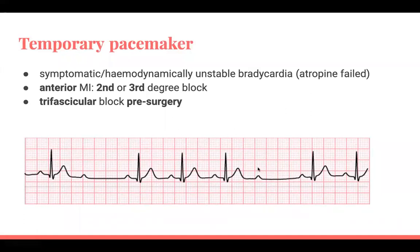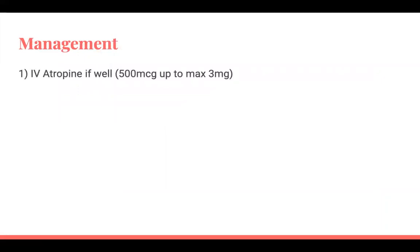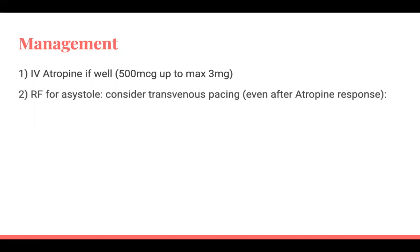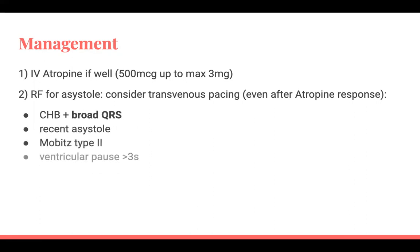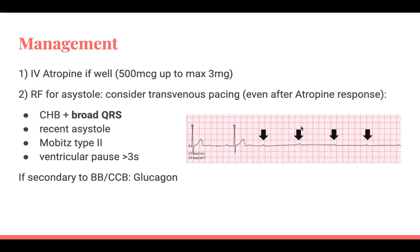Management of bradycardia: first step is IV atropine 500 micrograms, up to six times (maximum 3mg). If this doesn't work, consider transvenous pacing, especially if there are risk factors for asystole: complete heart block, broad QRS, recent asystole, Mobitz type 2, or ventricular pauses lasting more than three seconds. Consider transvenous pacing even if atropine has worked in these high-risk patients. If bradycardia is secondary to a beta blocker or calcium channel blocker, consider glucagon.